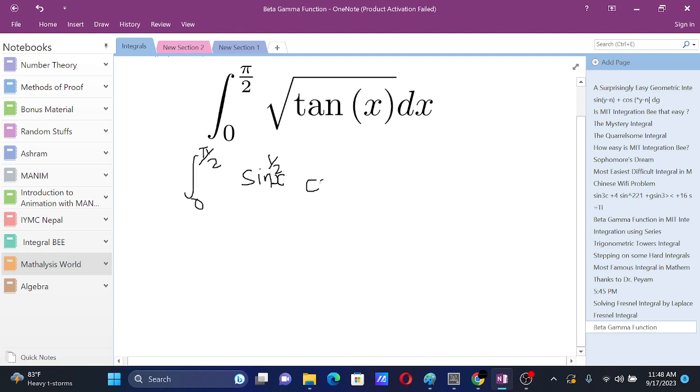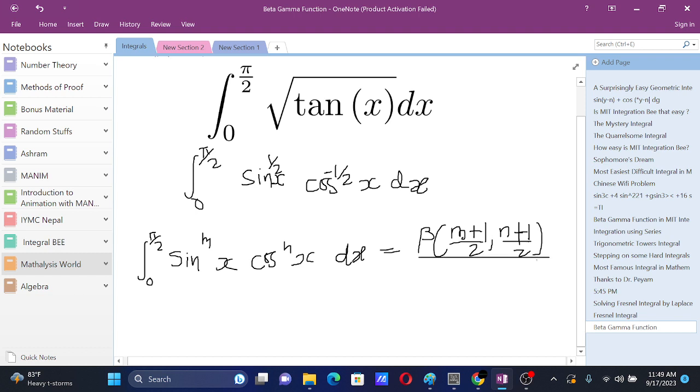Why is that? Because we know from beta gamma function that if we have integral from zero to π/2 of sin^m(x) cos^n(x) dx, we have the answer as beta of (m+1)/2, (n+1)/2, over 2.